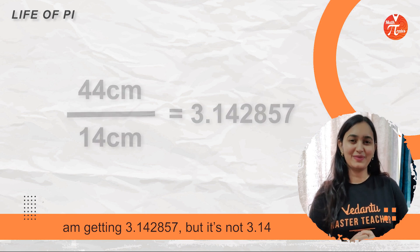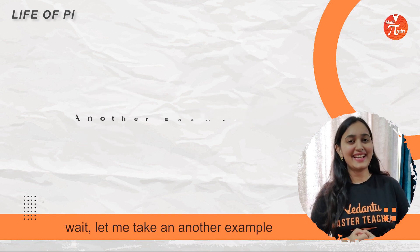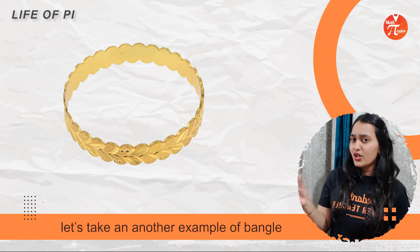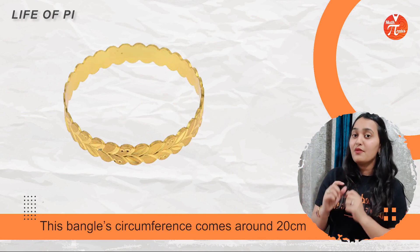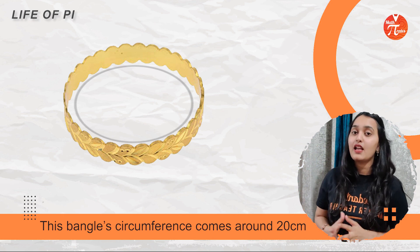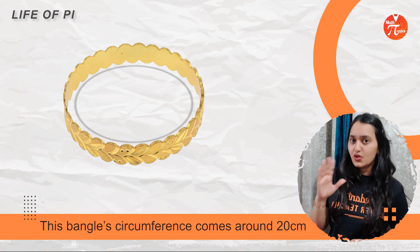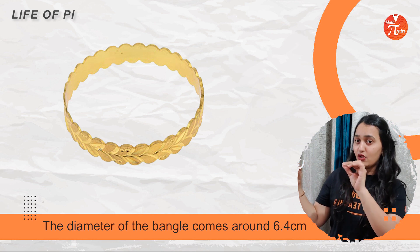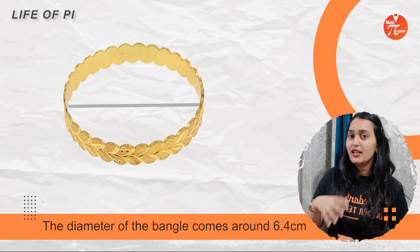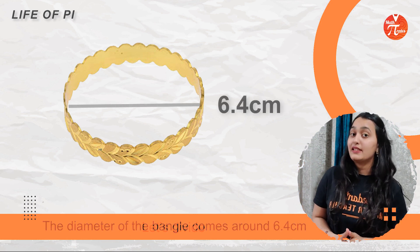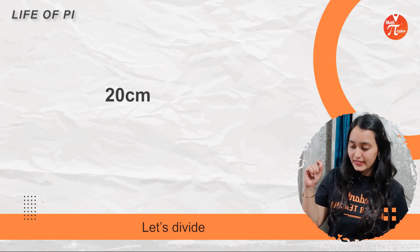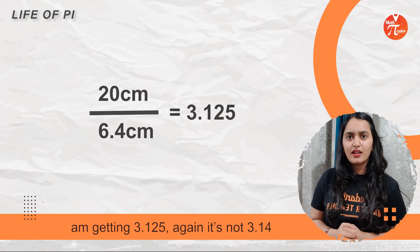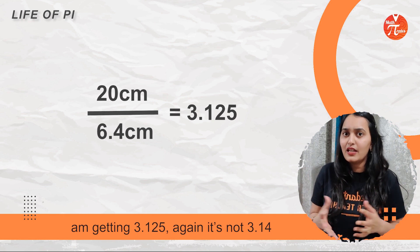Why is it not 3.14? Let's take another example — the bangle. I am measuring the circumference of this small bangle and it is coming out to be around 20 cm. Now I am measuring the diameter of this bangle and it is coming to be 6.4 cm. Dividing 20 cm by 6.4 cm, I am getting 3.125. Again, it is not 3.14.